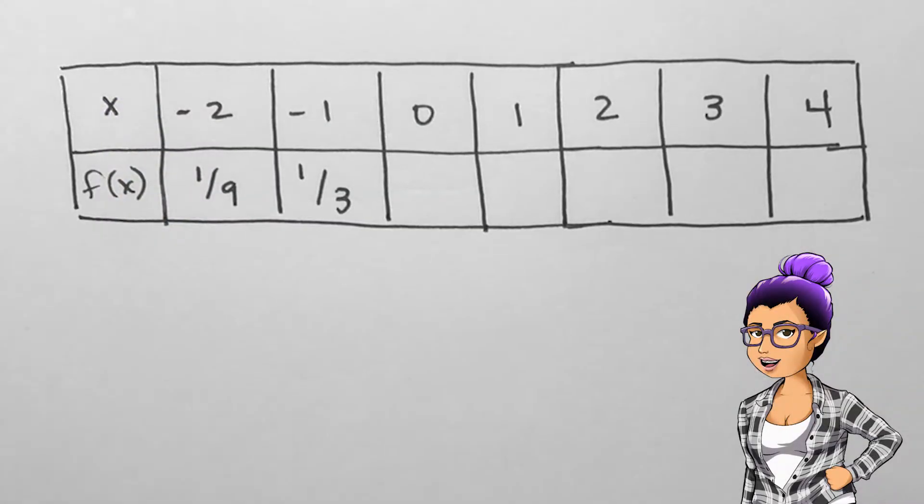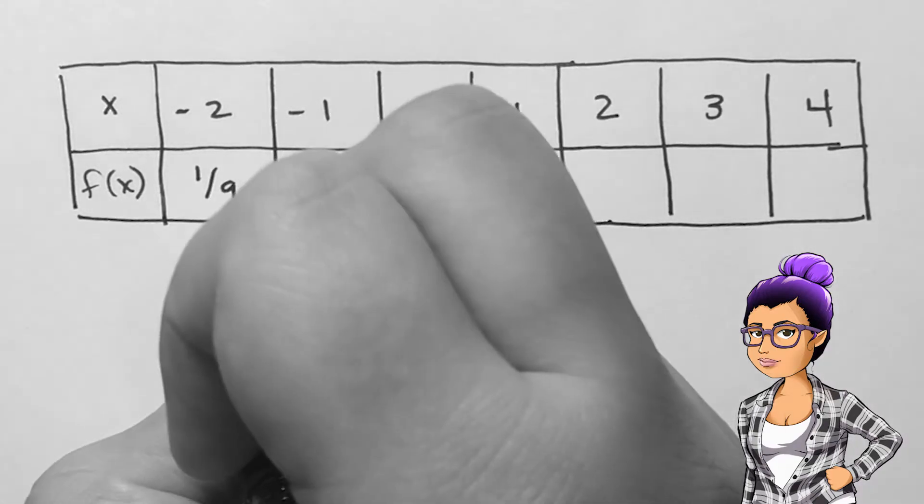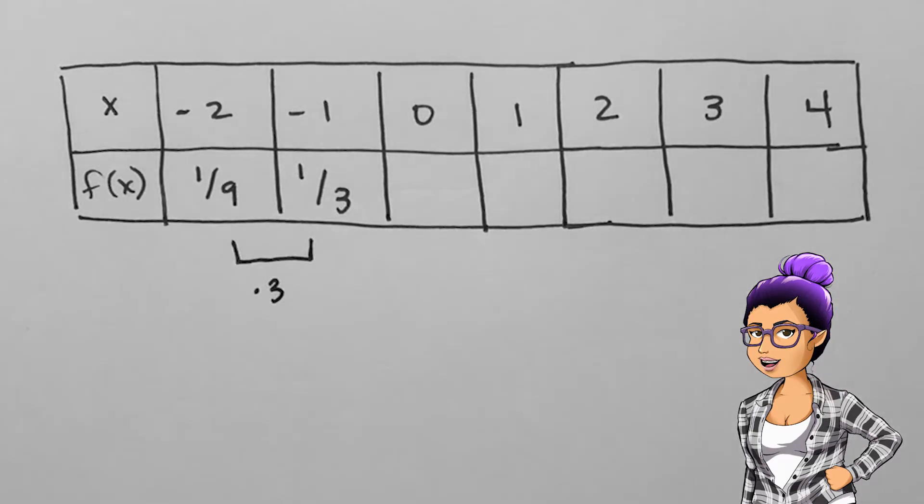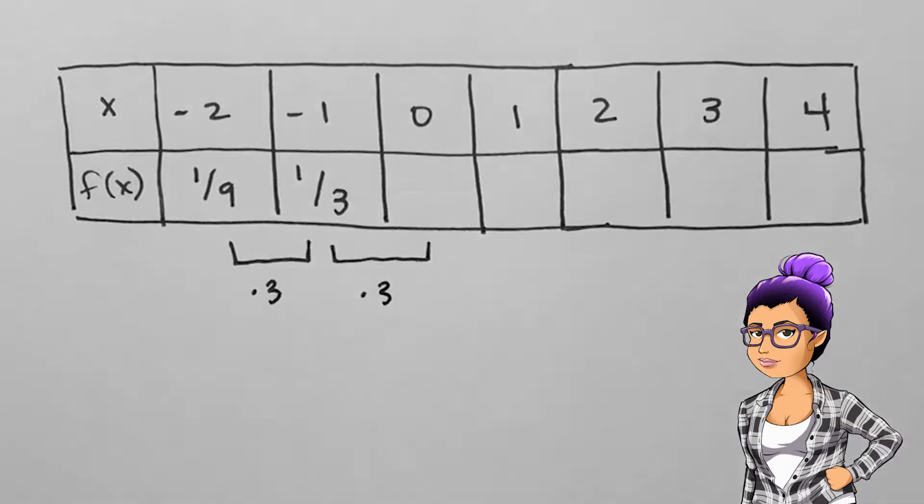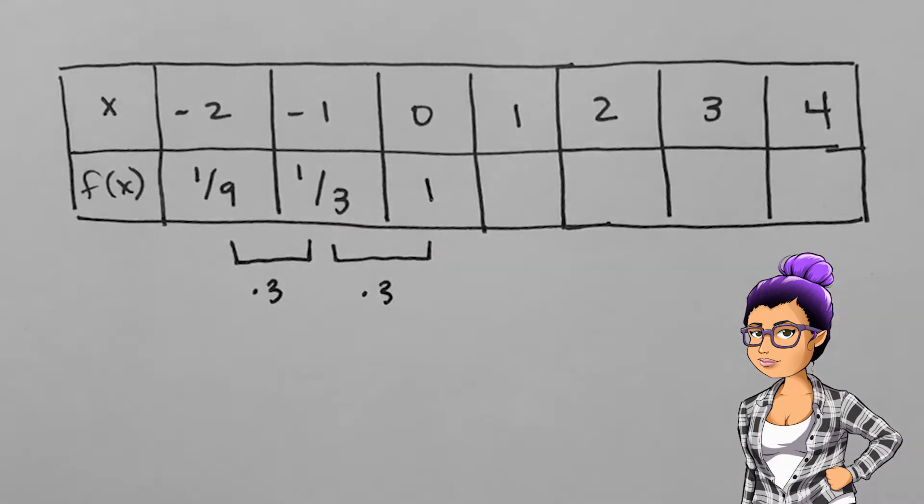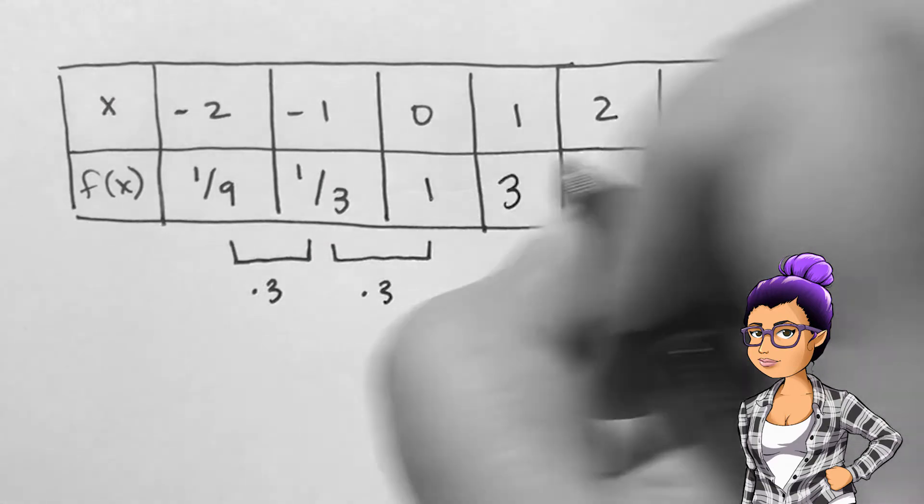Assuming this table for f(x) is exponential, let's find the remaining boxes. From negative 2 to negative 1, the outputs are multiplied by 3. Since there is a constant multiplicative rate, this will remain true for every input difference of 1.